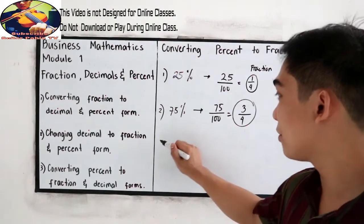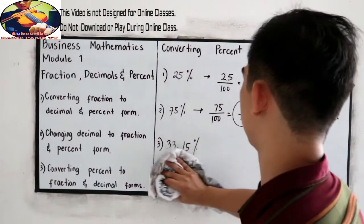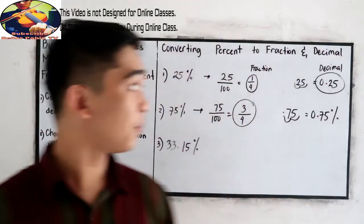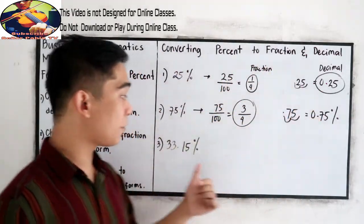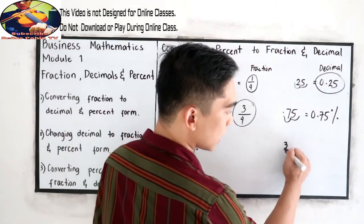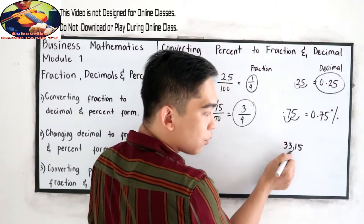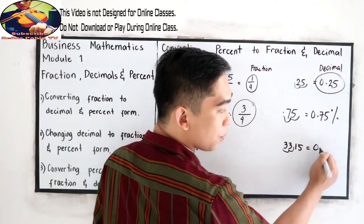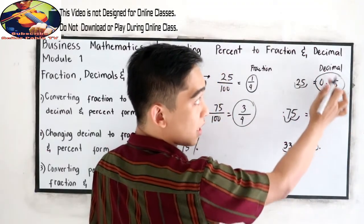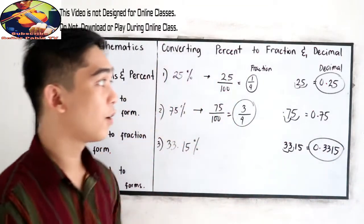Let's say we have 33.15%. If we have this case, the easiest way to find the fraction form and decimal form is to convert first into decimal form. So our 33.15% — move our decimal twice to the left: 1, 2. This will become 0.3315. Now let's remove the percent sign, because this is the decimal form. So 0.3315 is the decimal form.